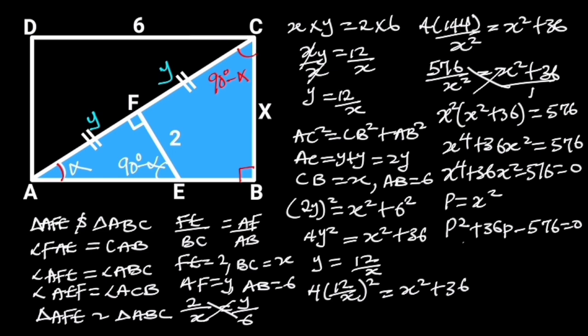Going further, we are going to factorize this equation. First, we multiply the first term and the third term of this equation. Doing so will give us minus 576 P squared. Next, we find the factors of minus 576 P squared that when added together will give us plus 36 P. These factors are minus 12 P and 48 P.